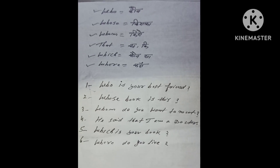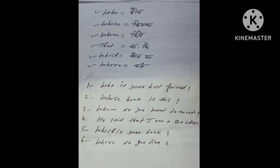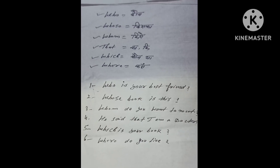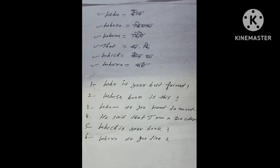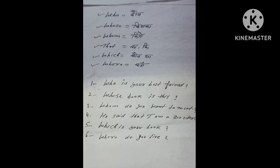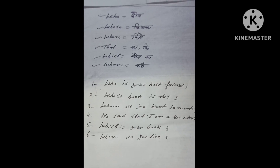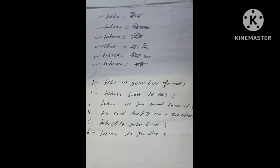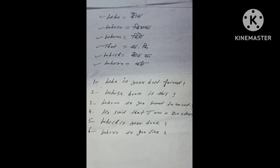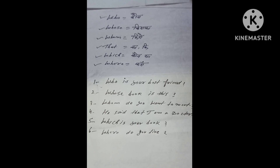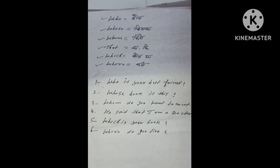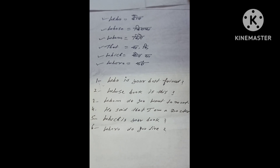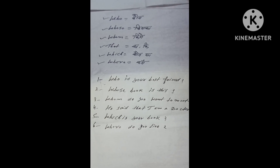Aaj hum seekhne ja rahe hai the use of who, whose, whom, that, which and where. Who matlab kya hota hai — koun. Whose matlab kya hota hai — kishka. Whom matlab kya hota hai — kishe. That matlab kya hota hai — ka ya ki. Which matlab kya hota hai — koun sa. Where matlab kya hota hai — kaha.